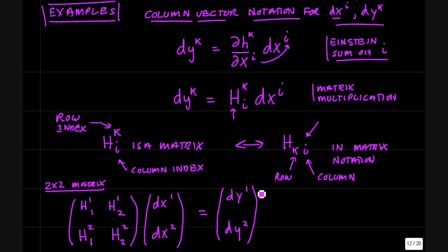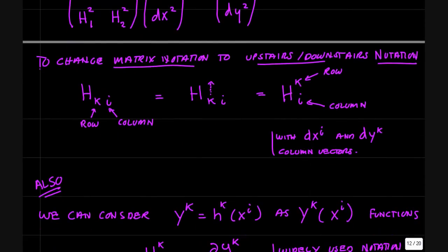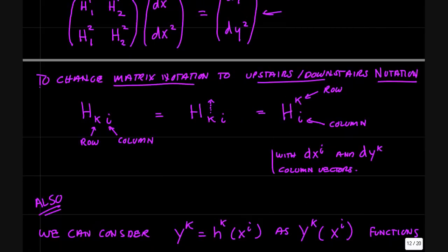So if you wanted to write this out for a 2 by 2 system, it would look like this. dx column vector multiplied by the matrix h gives you the dy column vector. Notice the upstairs index is 1, 1. The first row has equal upstairs indices and the columns 1, column 2, downstairs index gives you the columns.